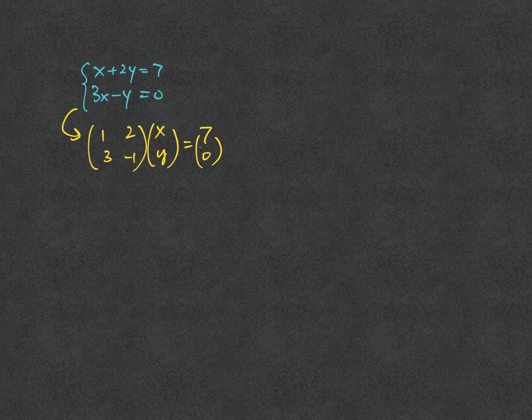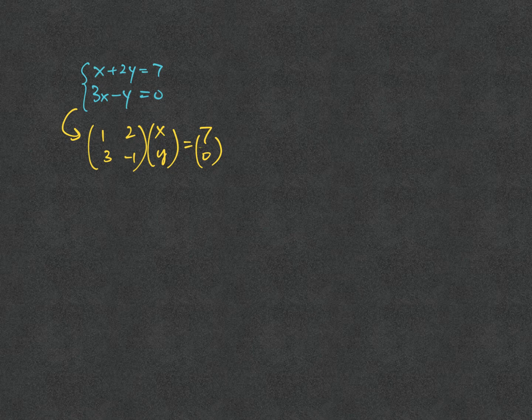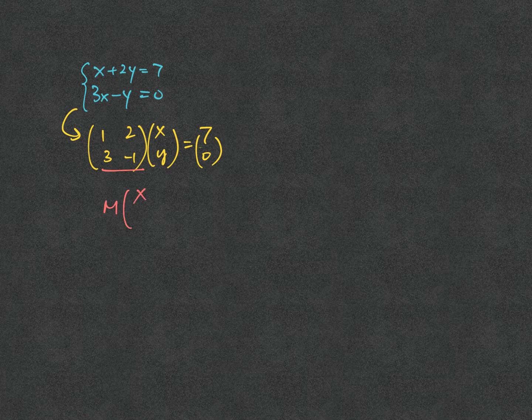After that, let's see how we can solve the equations by using matrix and determinants. If we call the matrix 1, 2, 3, minus 1 to be M, that means the question turns to M times (x, y) equal to (7, 0).